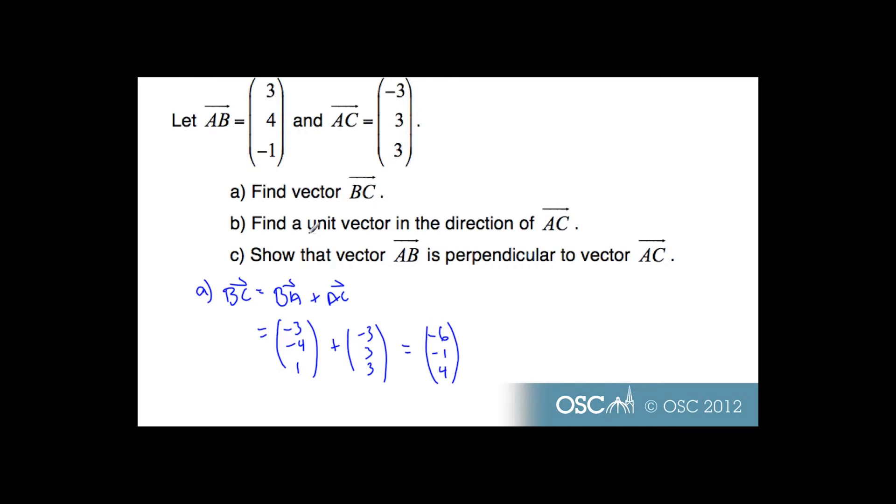In part B, we're going to find a unit vector in the direction of AC. A unit vector, this word here implies that I have a length of 1 unit or a magnitude of 1 unit. So in order to find that, I'm going to take the length of this vector, find out how long it is, and then shrink it down by dividing by its magnitude, and that will make it a length of 1.